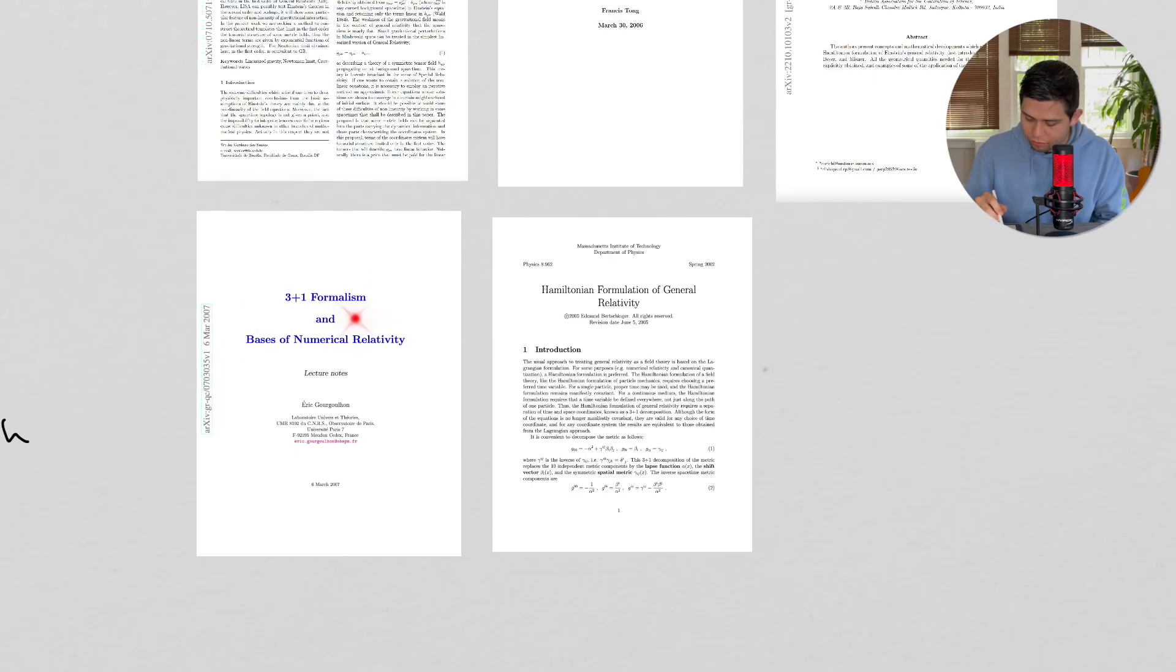And then two others, the 3 plus 1 formalism, and basis for numerical relativity. This is a little bit more outdated. This talks a little bit also about the ADM formalism and why it's important. It gets into numerical methods as well so that we might be able to incorporate this into our computers and generate algorithms that help us understand this as well. And I think I might try to do that a little bit in this series also. We'll see how that goes.